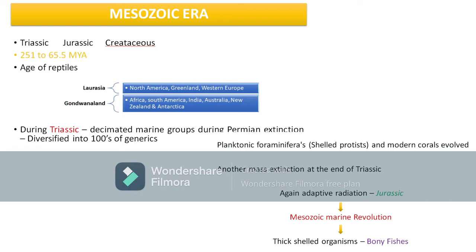The Mesozoic era lasted from 251 million years to 65.5 million years ago. It is a relatively large period called the Age of Reptiles. We have already seen the Devonian as the golden age of fishes, Carboniferous as the golden age of amphibians. During the Jurassic, reptile diversification increased significantly.